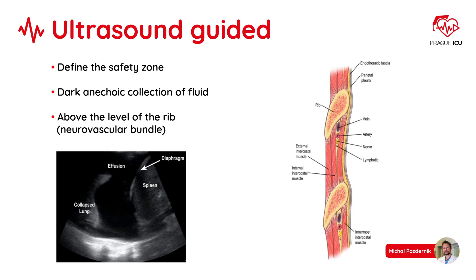Using ultrasound, define the safety zone, visualize the dark anechoic collection of fluid, and always do the puncture above the level of the rib to avoid the neurovascular bundle.